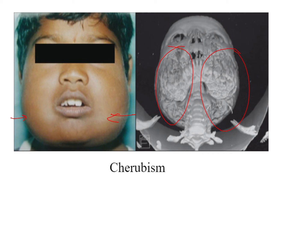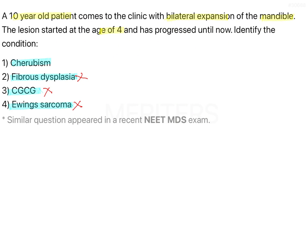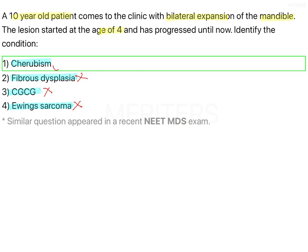There could be lymphadenopathy. The specific hallmark is the 'eyes to heaven' appearance, where the patient's eyes appear positioned upwards — eyes upturned to heaven. In the mandible, the lesions usually occur in the area of the ramus, as seen in this image, involving the body, while the condyles are usually spared. Radiographic assessment of cherubism shows bilateral multilocular expansile radiolucencies, which is a very diagnostic feature. So the given diagnosis in the patient should be option A, cherubism.